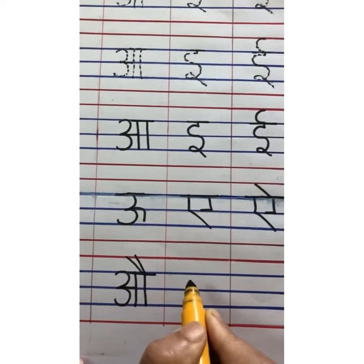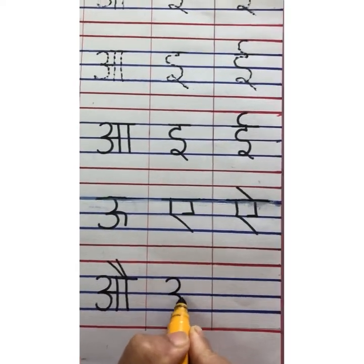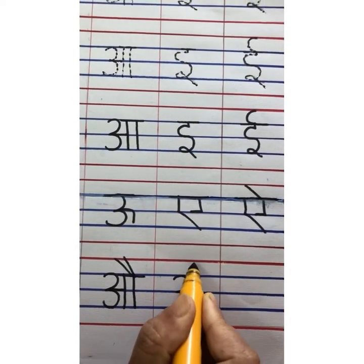O, ao, ang. Next swar is ang. So write ang.